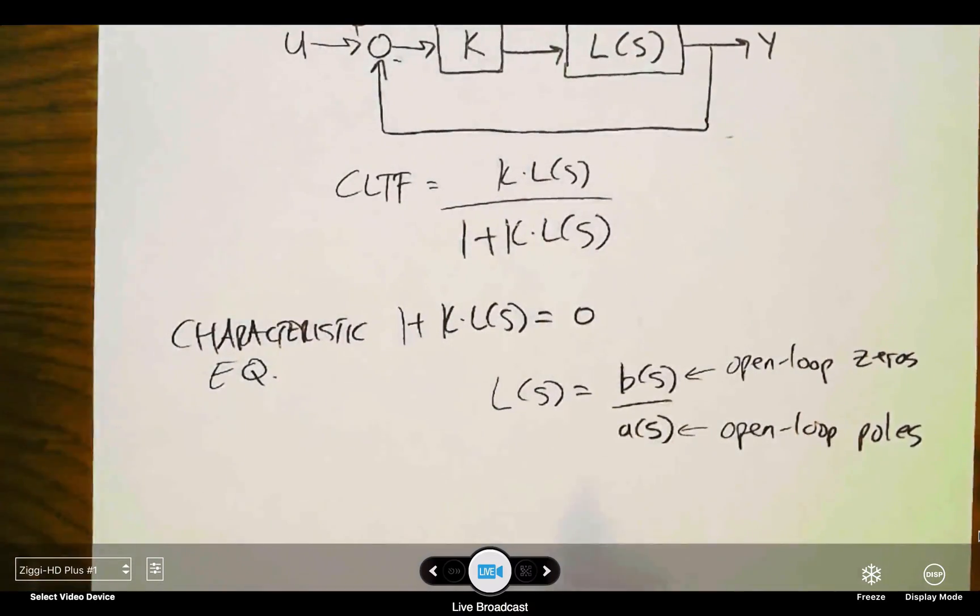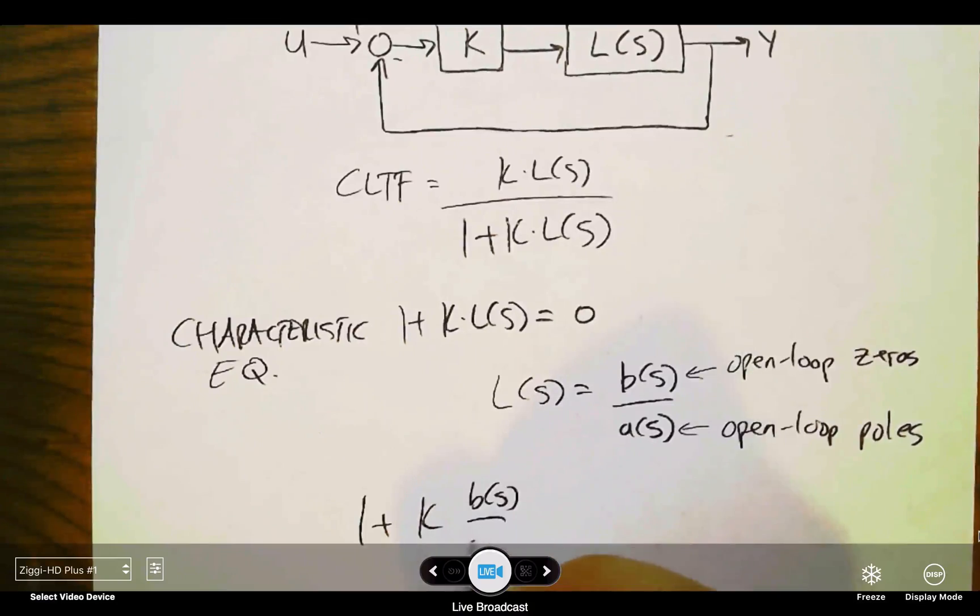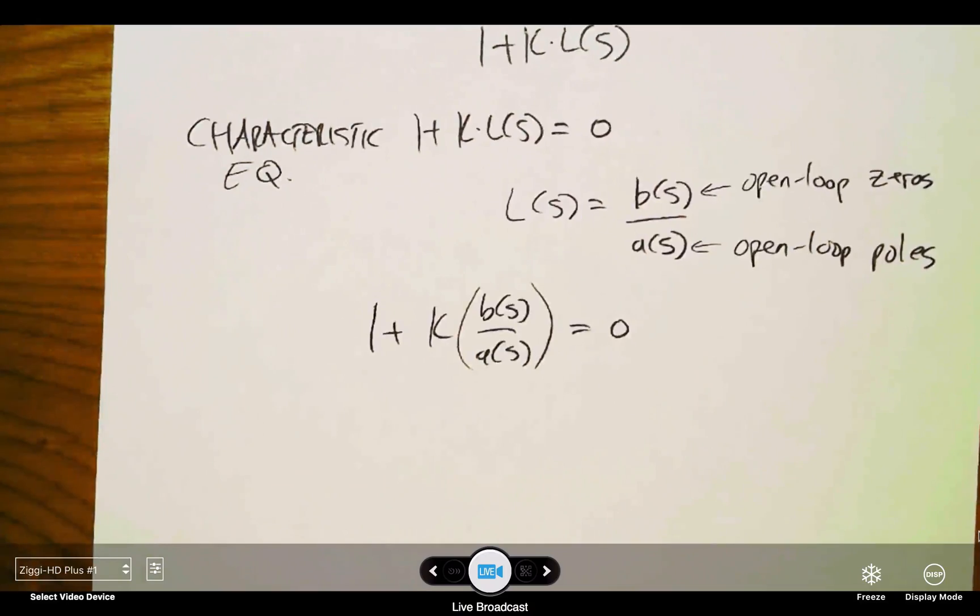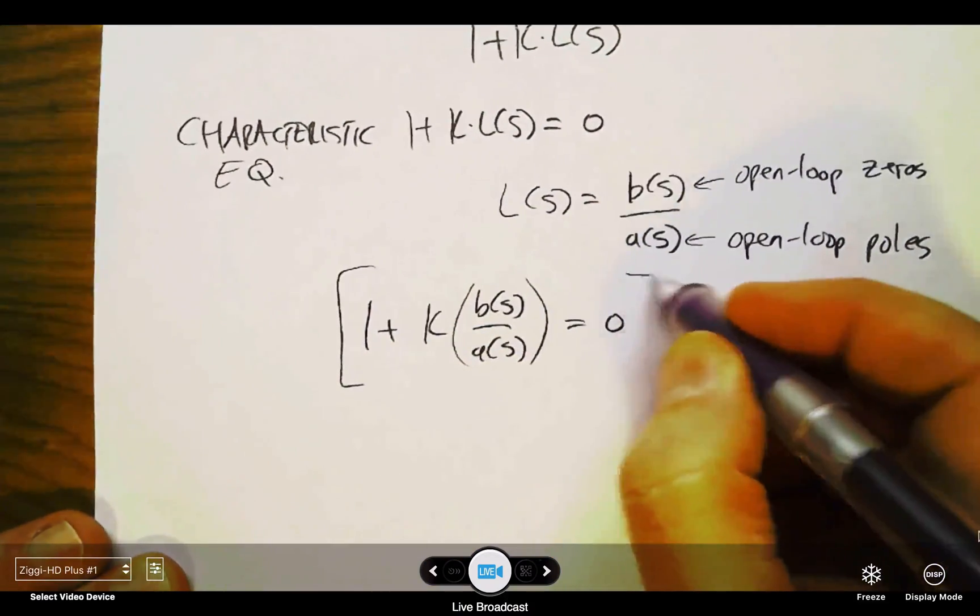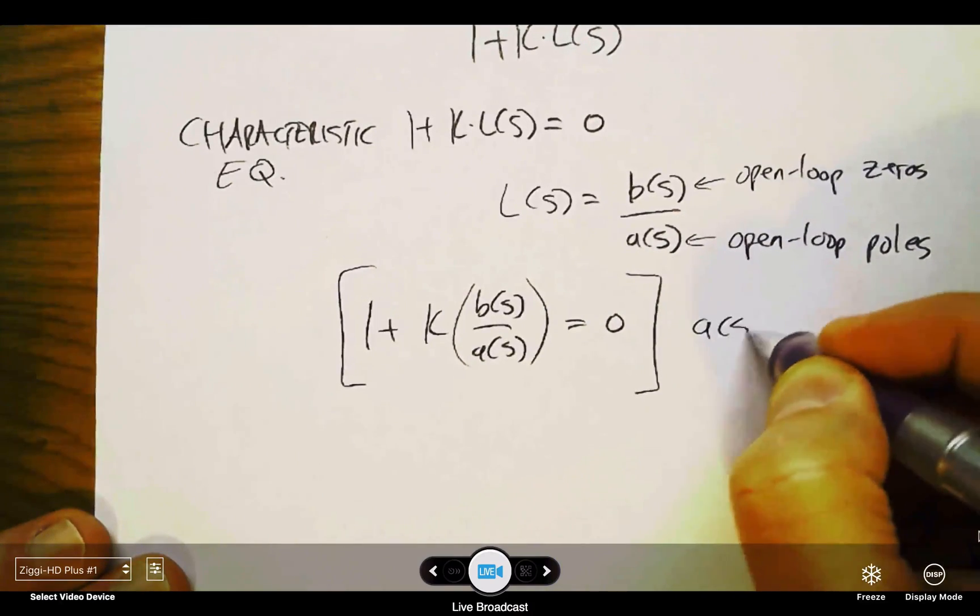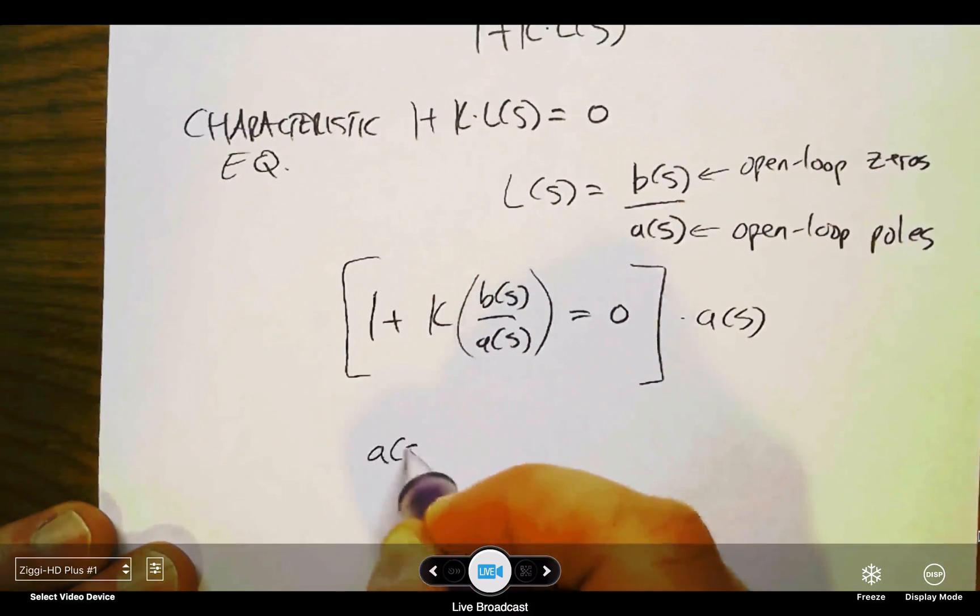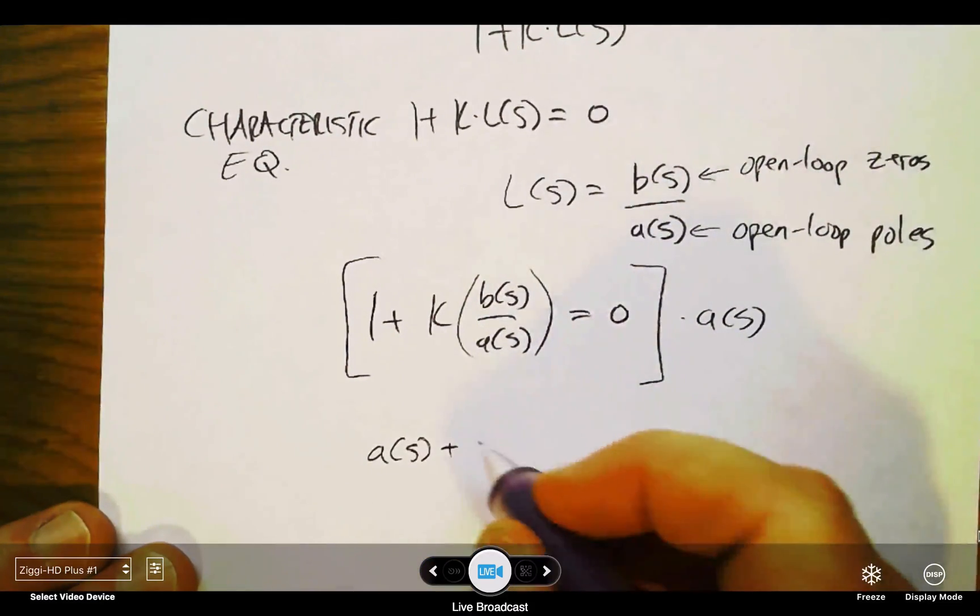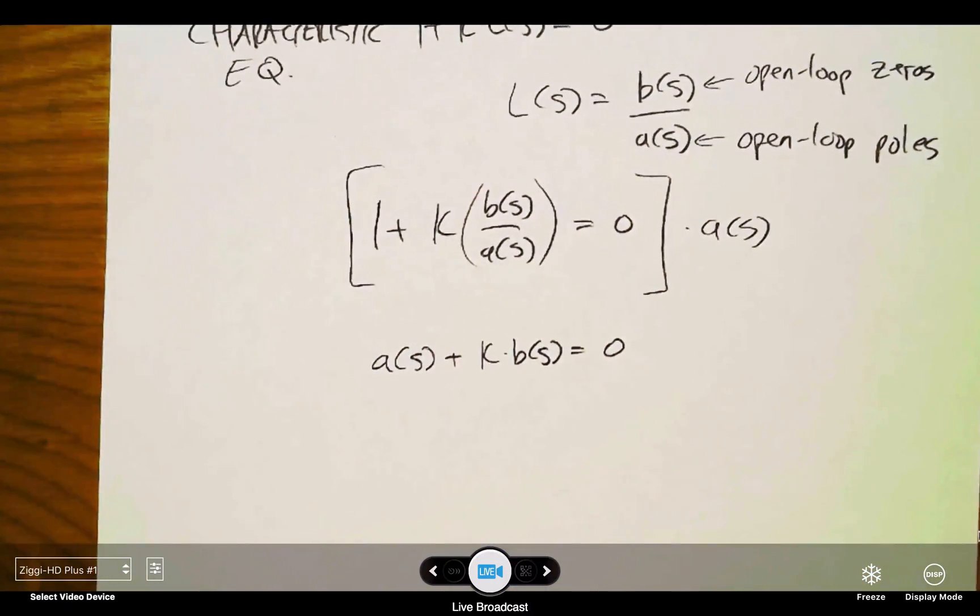So L(s) is b(s) over a(s). If I substitute that back into our characteristic equation, I would have that form. Now what happens if I multiply both sides of the equation by a(s)? This a(s) cancels with that and I'm left with a(s) plus k times b(s) equal to zero. So this is my modified characteristic equation multiplying through by the denominator of L.